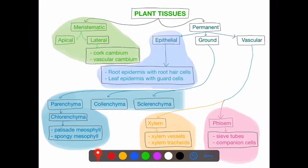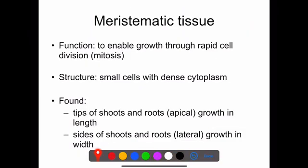So the first group that we're going to look at is the meristematic tissue. Then we will talk about your permanent tissues, of which there are three groups: epithelial, ground (also known as simple), and vascular (also known as complex).